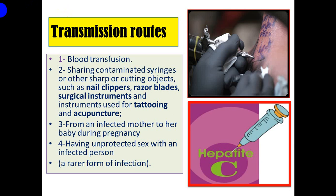The second transmission strategy is sharing contaminated syringes or other sharp or cutting objects such as nail clippers, razor blades, surgical instruments, and instruments used for tattooing and acupuncture. When these tools are contaminated with hepatitis C virus, they are responsible for transmission.